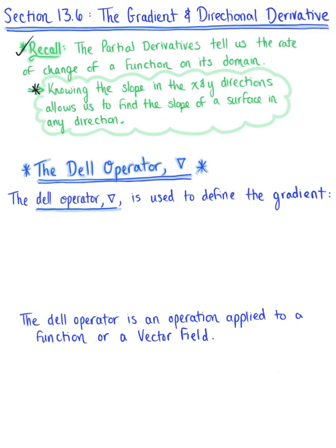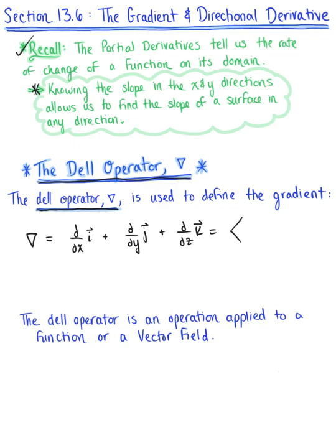Before we can define the directional derivative, we need to learn about the del operator and the gradient. So the del operator is used to help us define the gradient, and we denote this as del — that's our nabla symbol. We define the del operator as d/dx i-hat plus d/dy j-hat plus d/dz k-hat, or alternatively in component form as (d/dx, d/dy, d/dz).